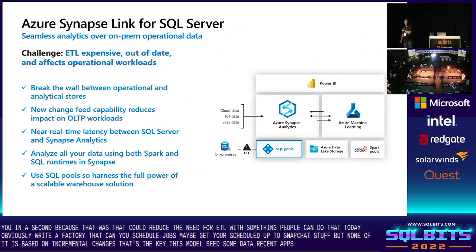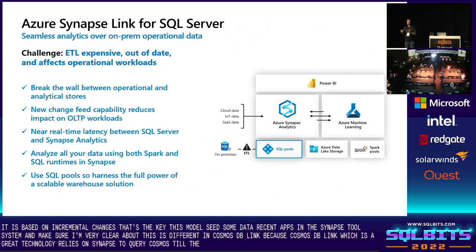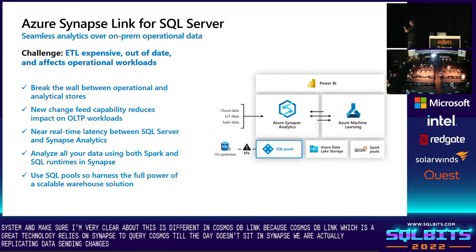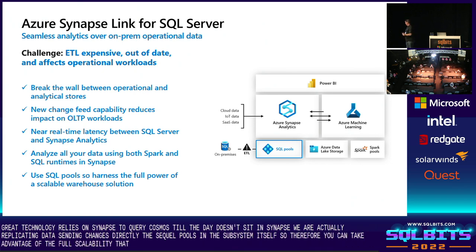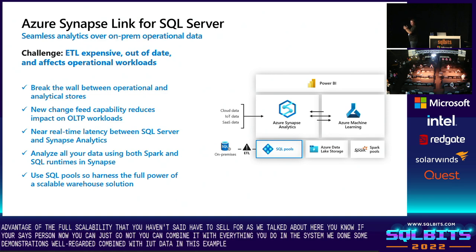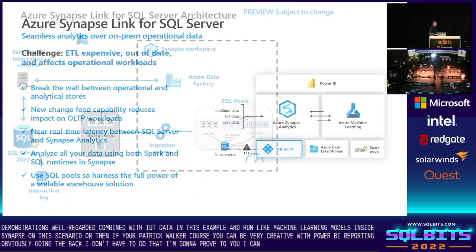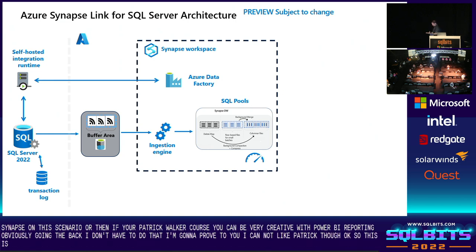To be very clear: this is different from Cosmos DB Link, because Cosmos DB Link relies on Synapse to query Cosmos — the data doesn't sit in Synapse. We are actually replicating data and sending changes directly into SQL Pools in the Synapse system itself, so you can take advantage of the full scalability of Synapse. You can combine it with everything you do in Synapse — we've done demonstrations combining it with IoT data and running machine learning models. Or you can do Power BI reporting. The architecture has key pieces: the dashed lines are the Synapse workspace, and inside there are SQL Pools.